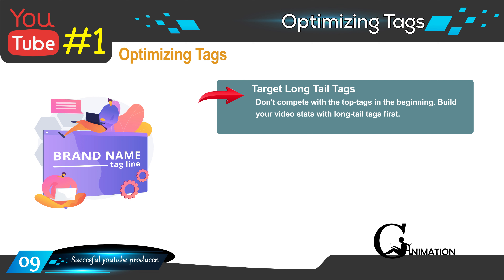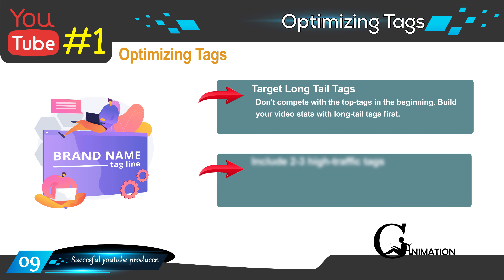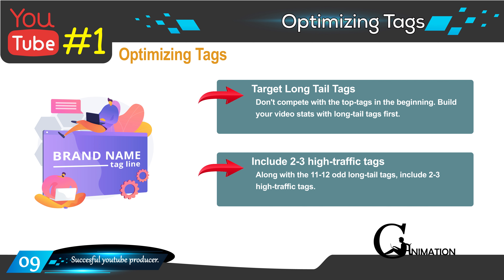When targeting tags, you shouldn't target very popular, very high-traffic tags right at the beginning, because your video is new, has no stats and no ranking. It's a very difficult task for a new video to rank for highly competitive, high-traffic tags. Instead, you should target the less competitive long-tail tags.